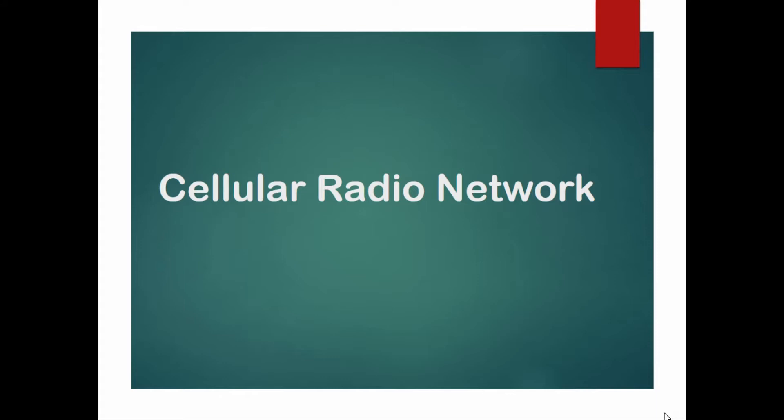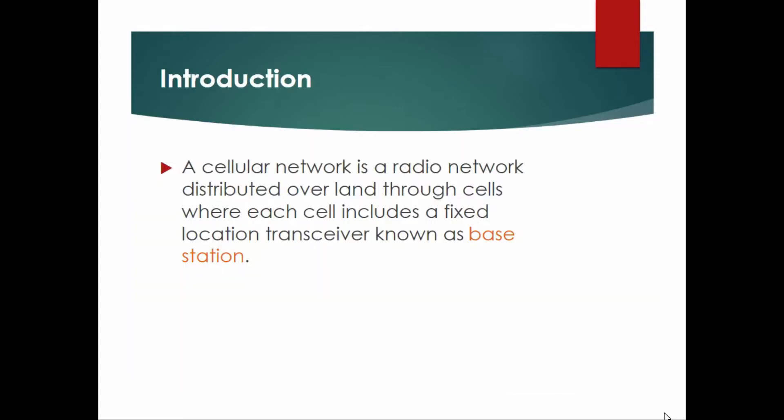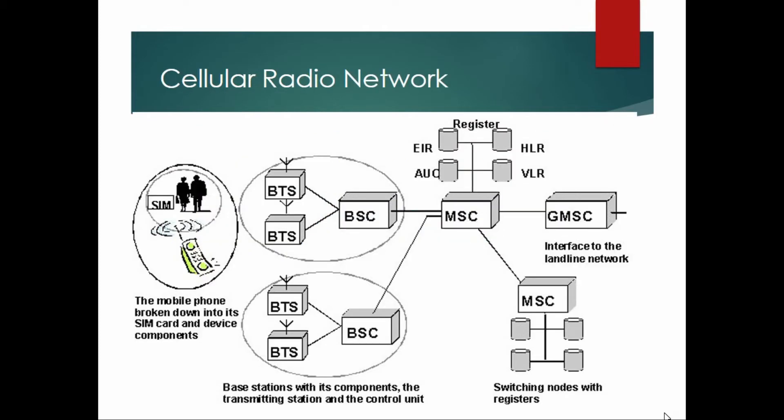Let's start our discussion. First, we see the introduction. A cellular network is a radio network distributed over land through cells, where each cell includes a fixed location transceiver known as a base station.